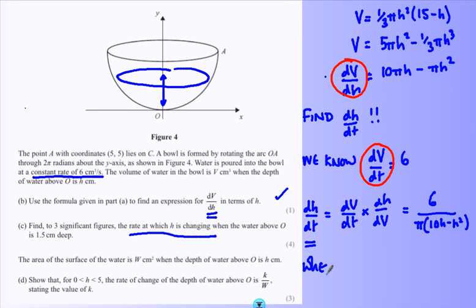When h is 1.5, we slot it in here. Put it through your calculator - I think it comes out as something like 0.150. Put that in your calculator and figure that out. And we've got our last bit: area of the surface.